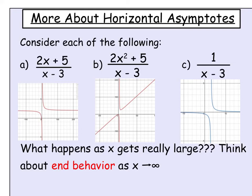Let's continue with graphing rational functions and spend some time thinking about asymptotes — how they come about and what they do. We have three examples here. We'll talk about horizontal asymptotes first and then vertical asymptotes. All three examples represent a distinct situation.